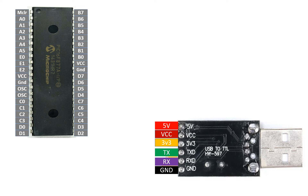Whichever USB to TTL device you use, TX, RX, and ground pin are always there. There might be different options for the 5-volt, VCC, or 3.3-volt — some USB to TTL devices only have a VCC pin, some don't have a 3.3-volt pin. Most devices the 3.3-volt pin is not available, but it doesn't matter. The important ones are TX, RX, and ground — that's all.